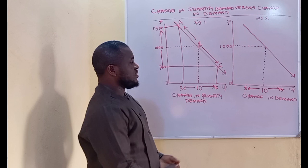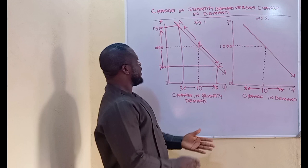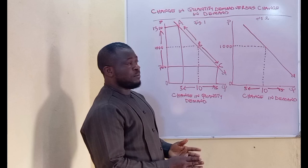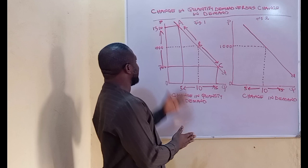Therefore, this series of backward and forward movement from B to A or from B to C along the same demand curve is what is regarded in economics as change in quantity demand, or movement along the demand curve. It is only brought about by an increase or decrease in the price of the commodity in question.